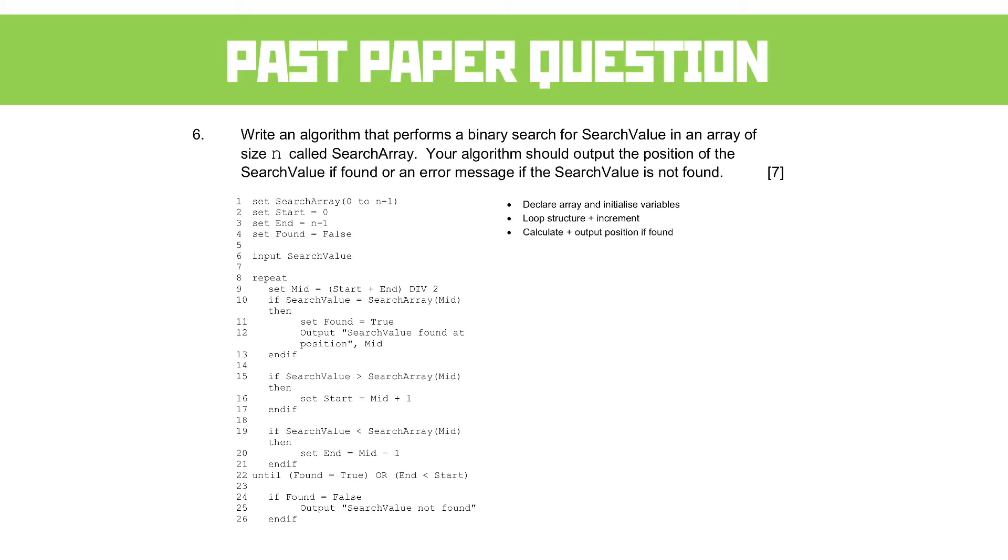You get a mark for calculating and outputting the position if it's found. You get a mark for the correct terminating condition for the loop, and you get a mark for correctly discarding half of the array - if it's greater than you discard the right hand side, and discarding the left hand side if it's less than.